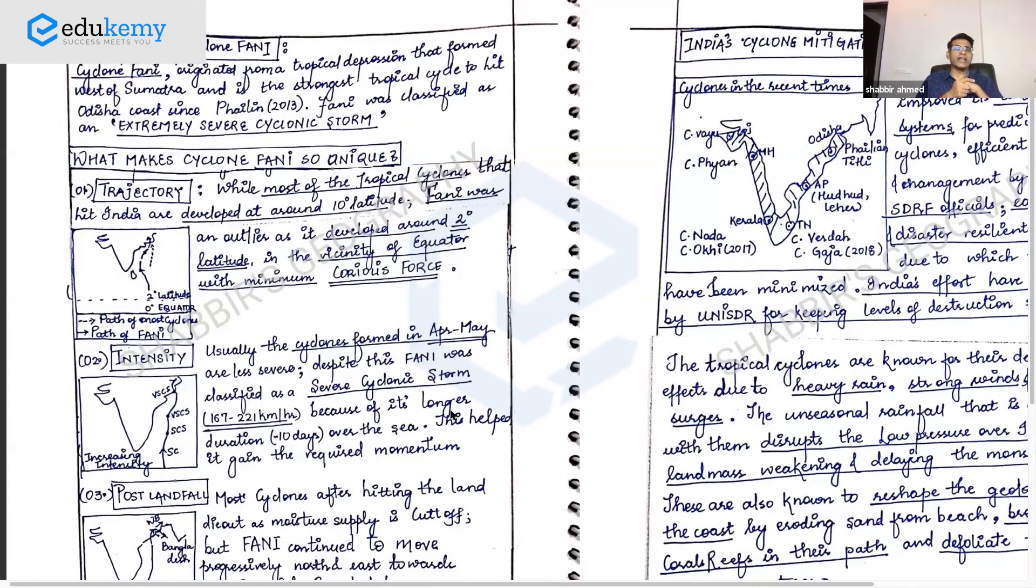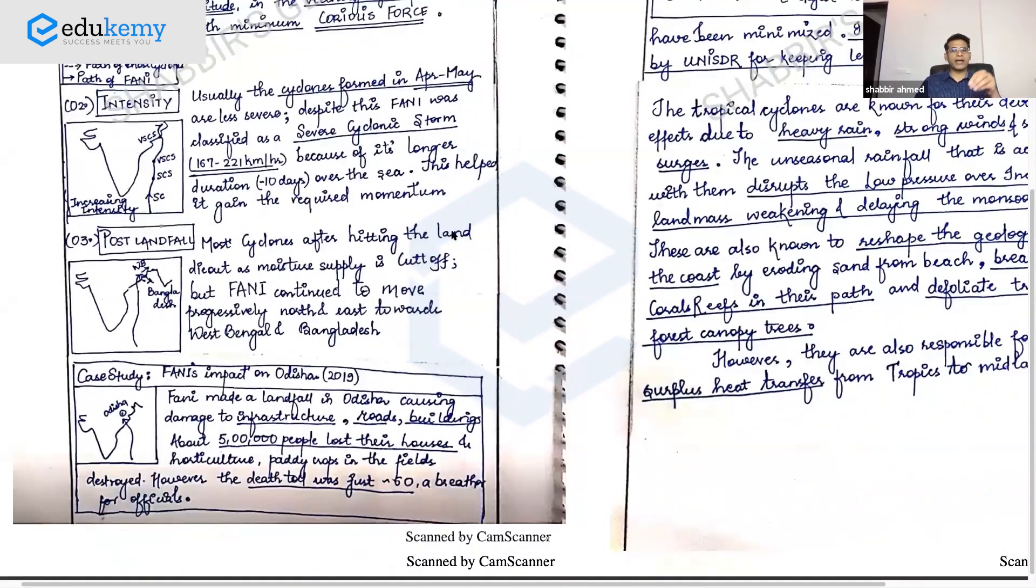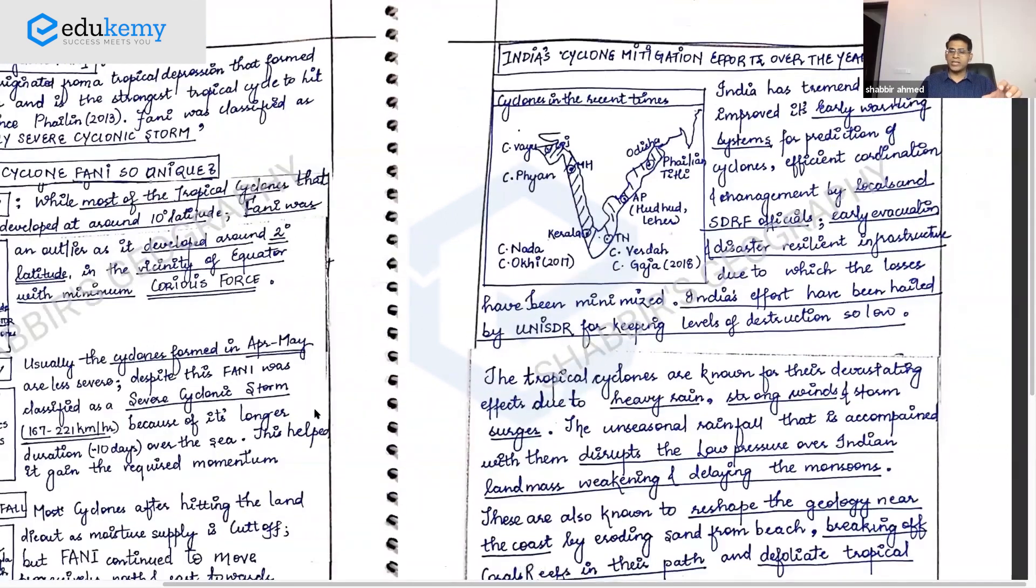Fani originated as a tropical depression that formed west of Sumatra. Strongest cyclone to hit the east coast since Phailin in 2013, an extremely severe cyclonic storm. What makes Fani unique: the path, the intensity, and what happened post-landfall. It continued to move towards West Bengal and Bangladesh. Then include facts on Fani - how many people were impacted. This is an example of a case study in a small box: deaths recorded, impact, which part of Odisha.